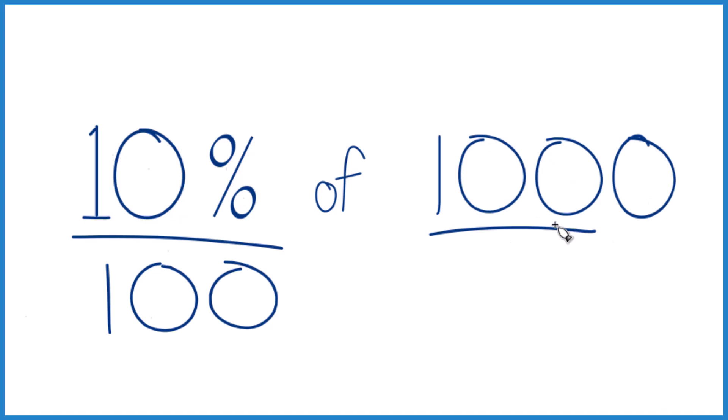But I have 1,000, so instead of 10, I'm gonna add another zero, that'll be 100. So 10% of 1,000, that's 100.